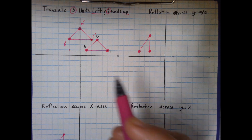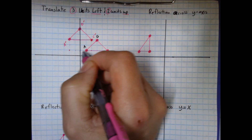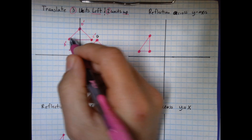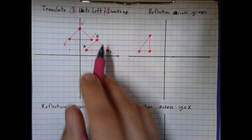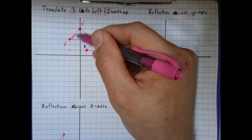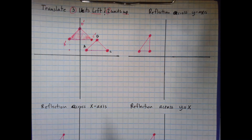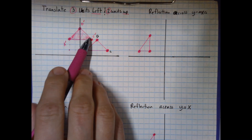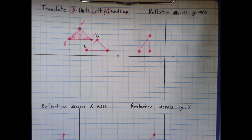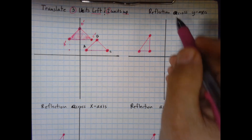Notice the shape did not change orientation and did not change in size — it's still the same scale. The only difference is every single point shifted three units to the left and two units up. The shape should look identical; I'll shade it in. Be sure to put the prime symbols on each vertex when doing transformations.